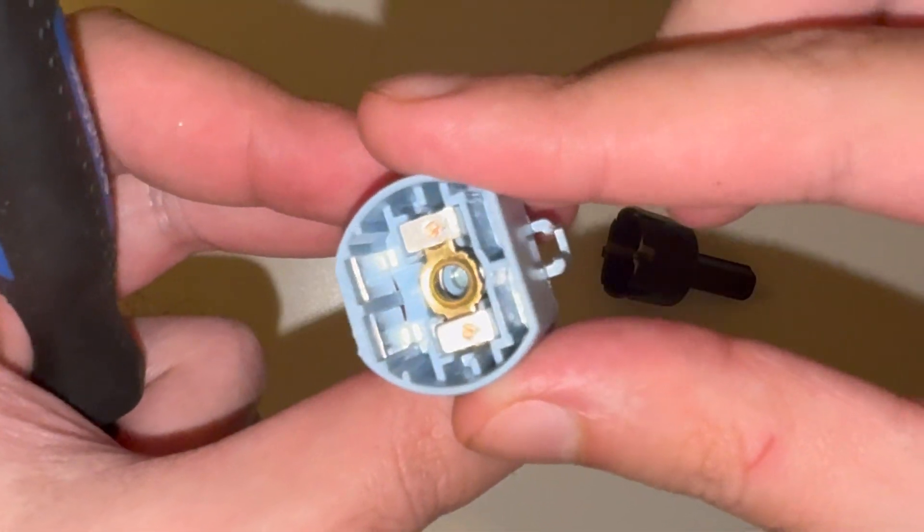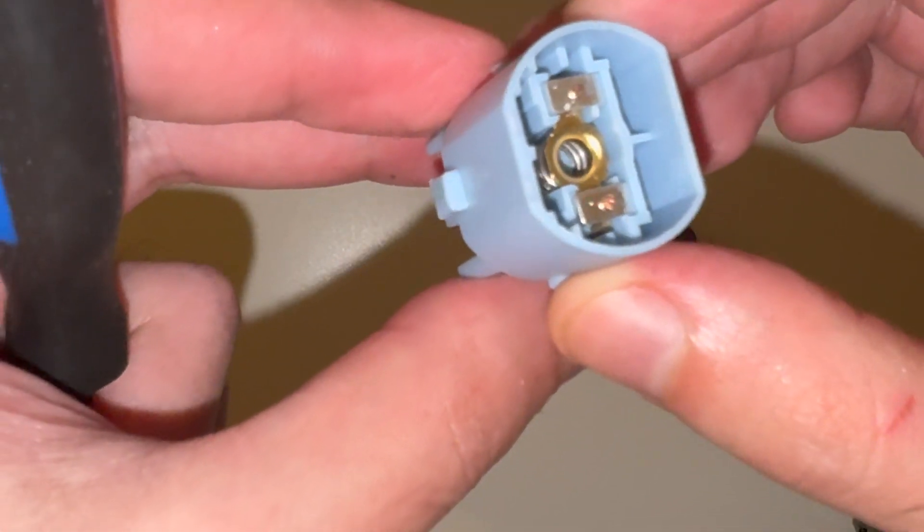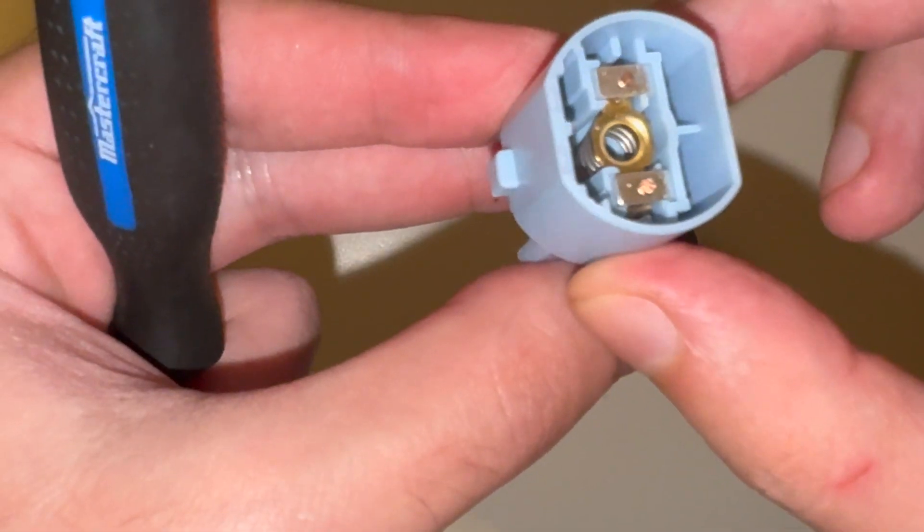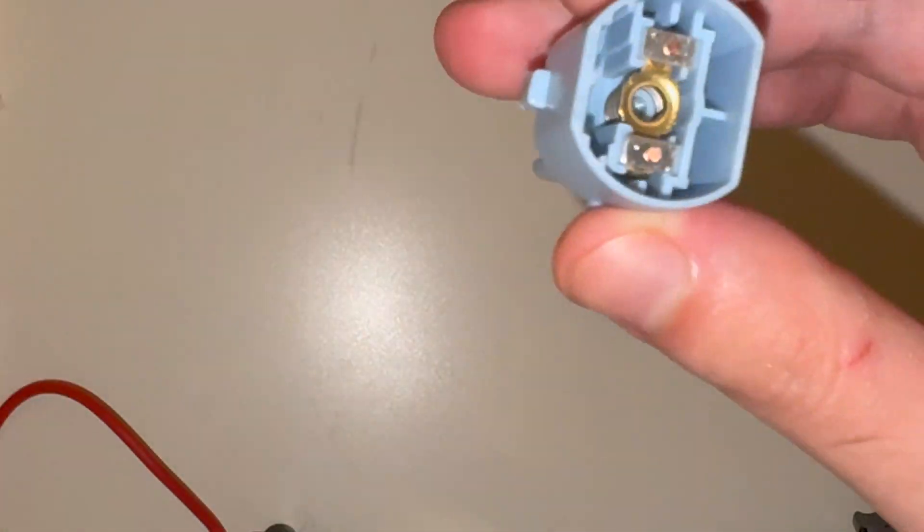This is necessary because the stoplight switch, unlike the brake monitoring switch, has to deliver enough power to turn on the brake lights, which require about 45 watts.